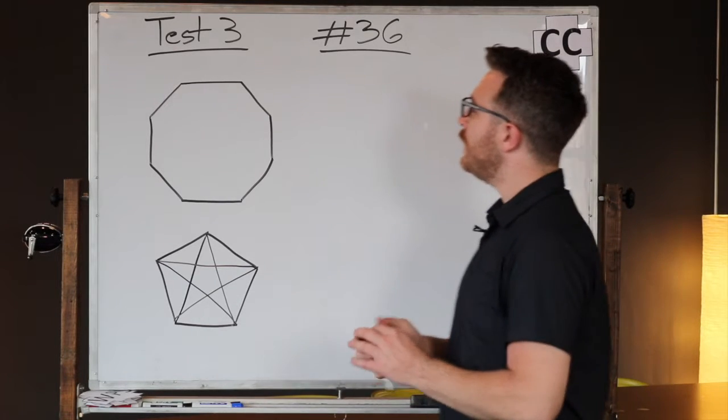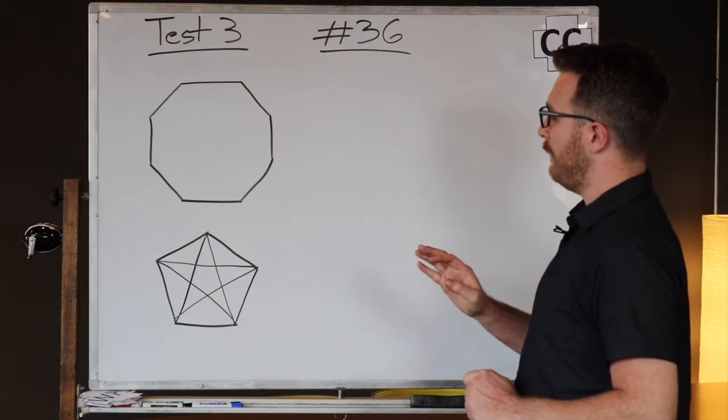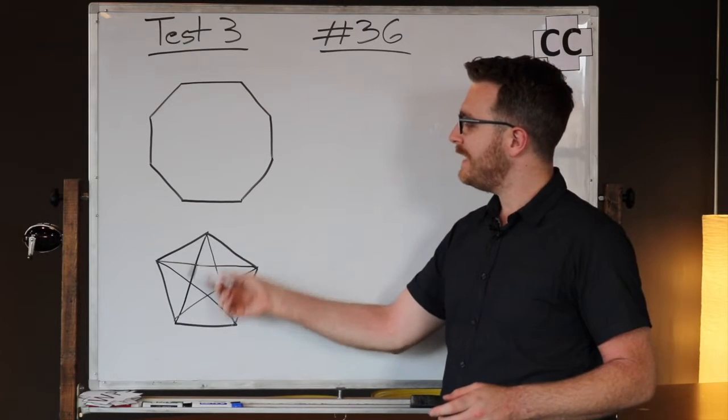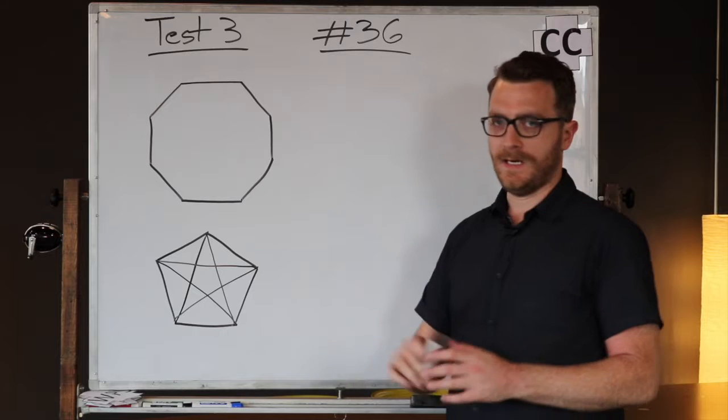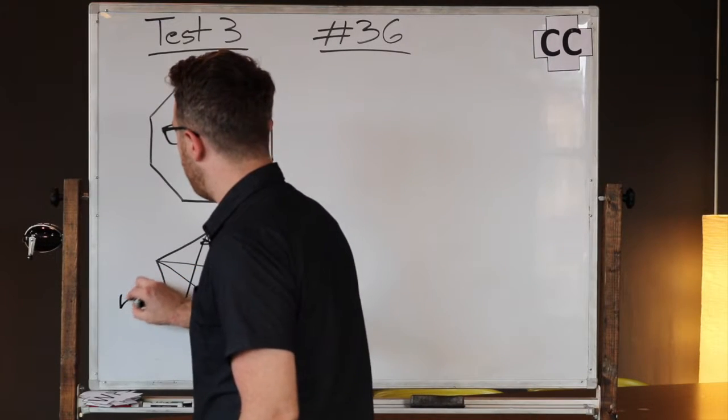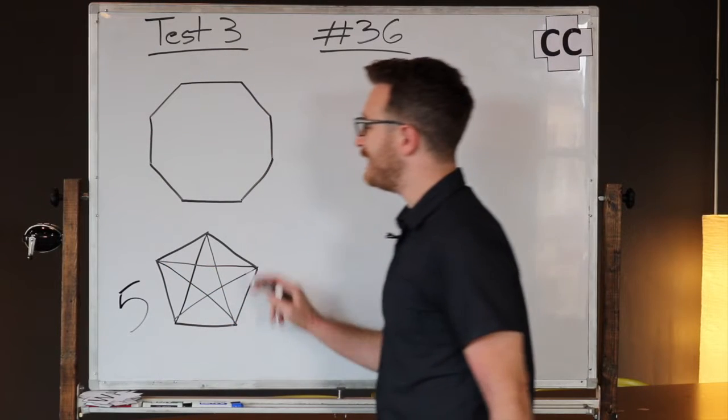Okay, here we are. So what we have here is a shape and inside all the lines that connect inside this pentagon. So they've told us that this pentagon has five lines connecting the points inside.